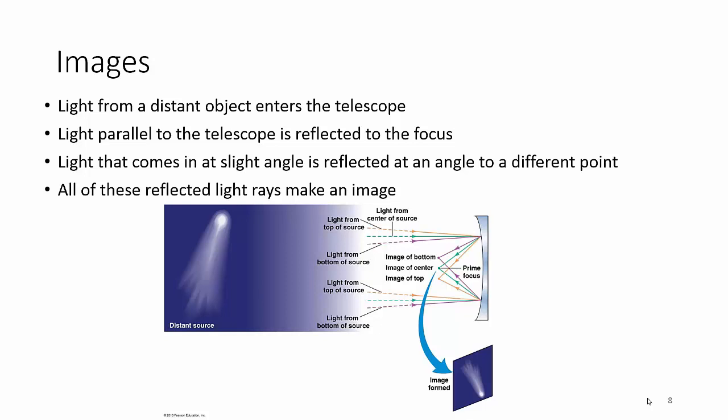It reflects the light back to its focus, and all of this light is gathered to make your image. Now you'll notice the image and the source are upside down, but there's telescopes that can correct for that, and software and yada yada yada.